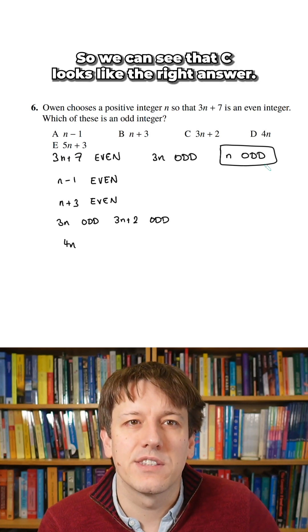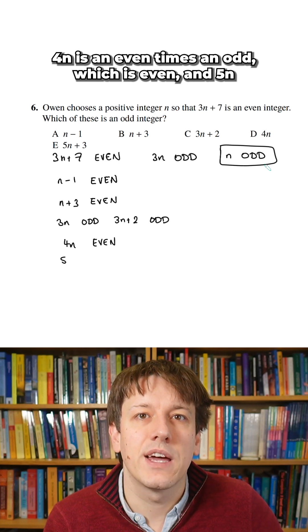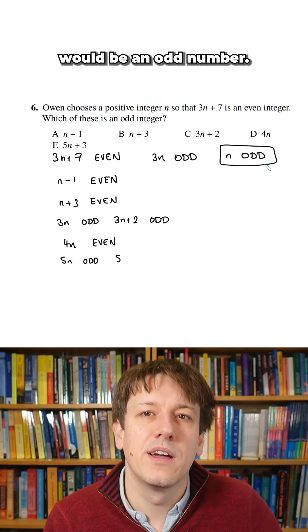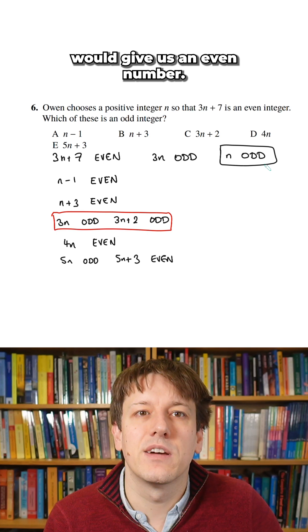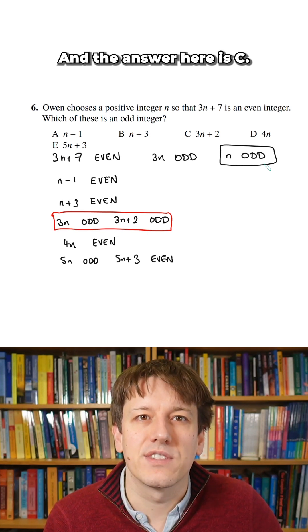So we can see that C looks like the right answer, but let's just double check the others. 4n is an even times an odd, which is even, and 5n would be an odd number. An odd plus an odd, 5n plus 3, would give us an even number. So it's certainly 3n plus 2, and the answer here is C.